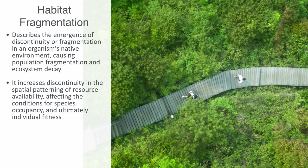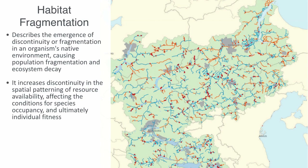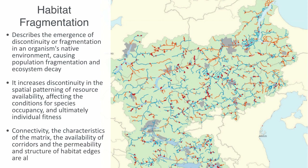This graphic of the river network in part of Denmark illustrates anthropogenic fragmentation along the country's waterways, where every red dot indicates physical barriers to fish migration such as dams. Connectivity among fragments, the characteristics of the matrix, the availability of corridors for movement between fragments, and the permeability and structure of habitat edges are all important in this context — affecting the structure, persistence, and strength of the ecological network.